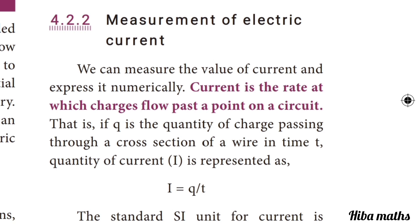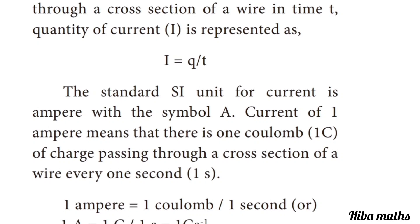We can measure the value of current and express it numerically. Current is the rate at which charges flow past a point on a circuit. If Q is the quantity of charge passing through a cross section of a wire in a time t, the quantity of current I is represented as I = Q/t. The standard SI unit for current is Ampere, with the symbol A.